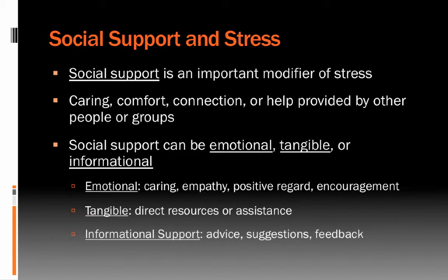Social support can be broken down into three categories: emotional, tangible, or informational. Emotional support is the caring, empathy, positive regard, or encouragement you get from people — relational and emotional types of support. You may also get tangible social support, which may be direct resources or assistance, help that somebody provides, or resources that give you that might make it easier to cope. And lastly, informational support — things like advice, suggestions, or feedback.